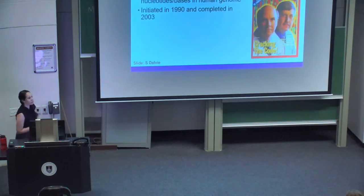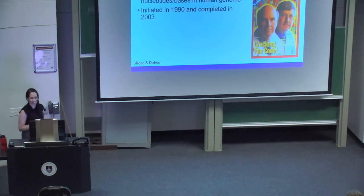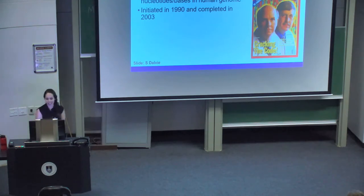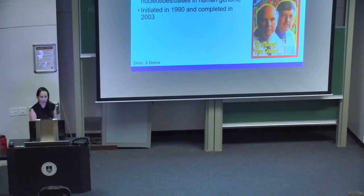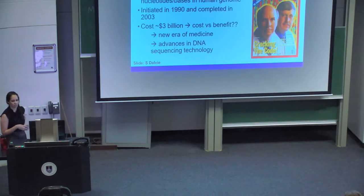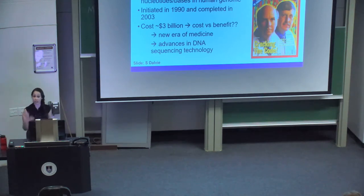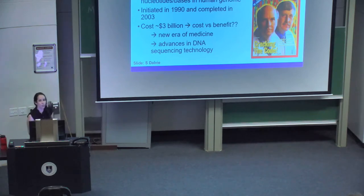The Human Genome Project was an extremely ambitious project initiated in 1990 and completed 13 years later. Its aim was to sequence all 3 billion nucleotides in the human genome. Its cost was approximately 3 billion US dollars — astronomical even now. While there have been discussions about cost versus benefit, the Human Genome Project ultimately ushered in a new era of genomic medicine and paved the way for cutting-edge advances in DNA technology.